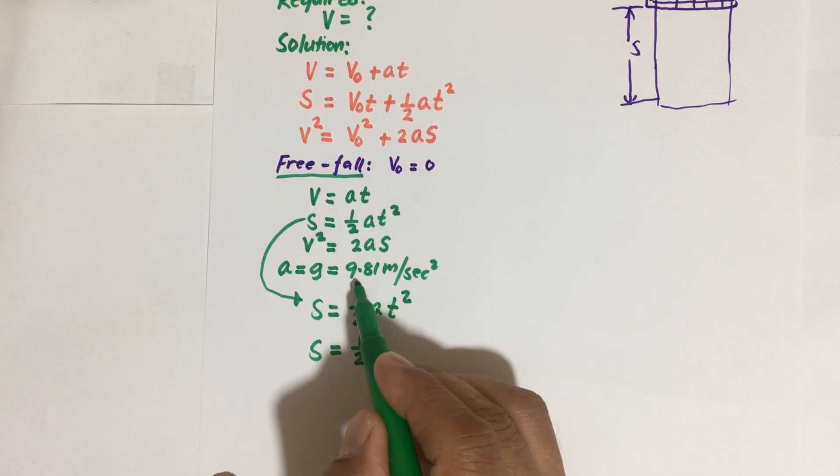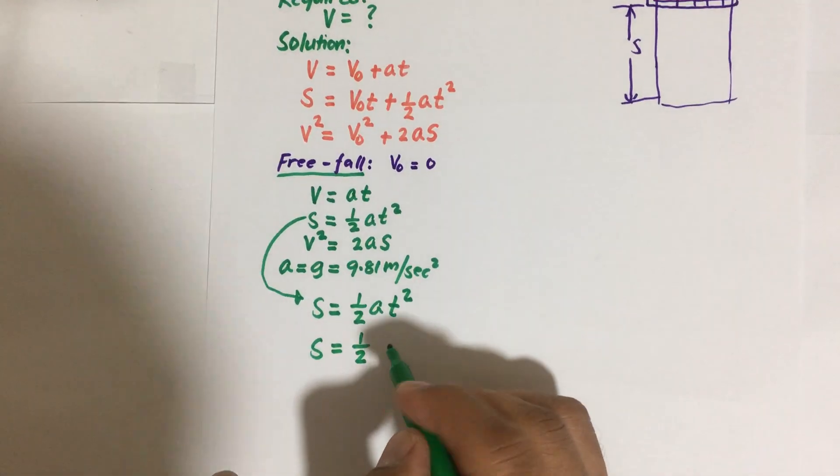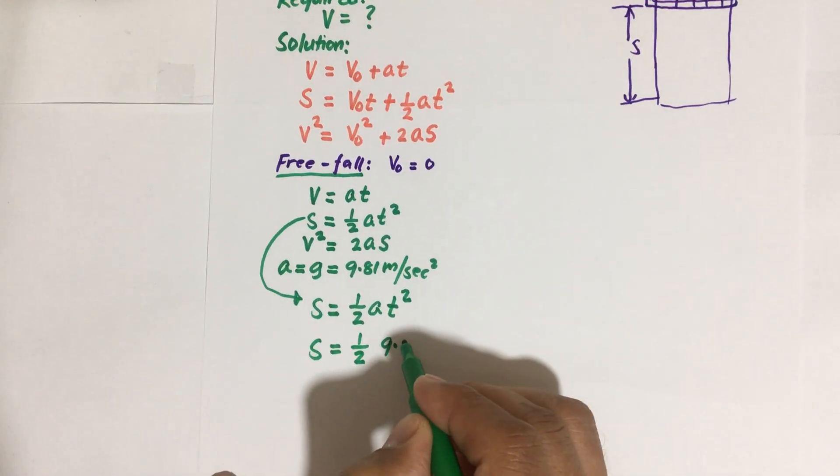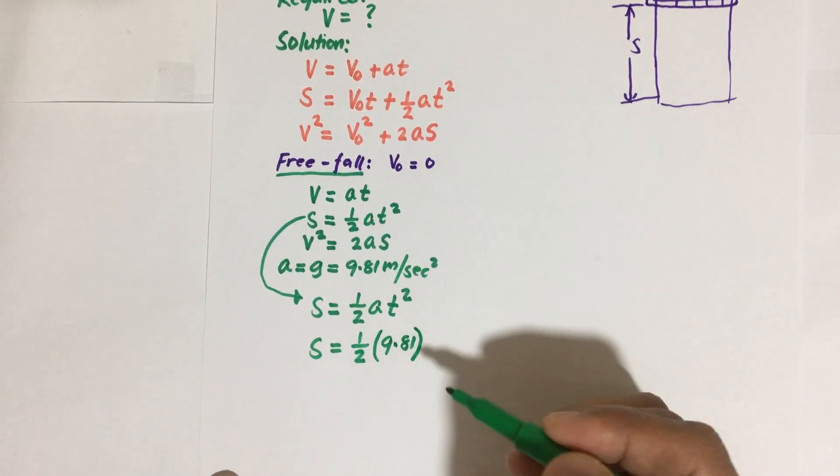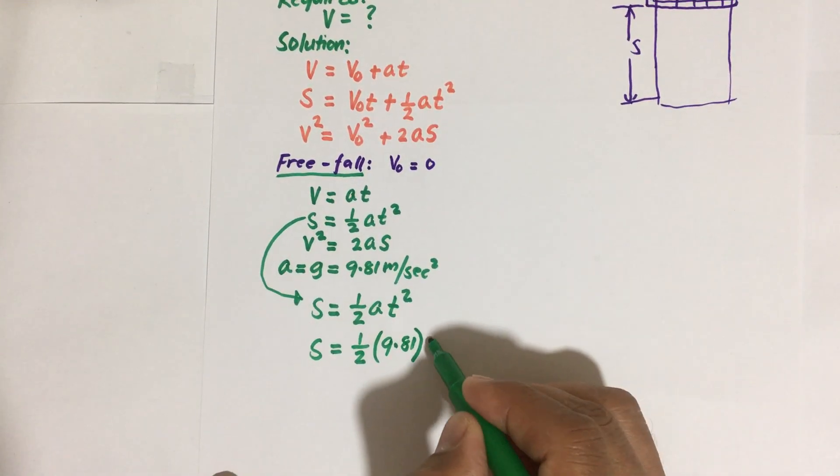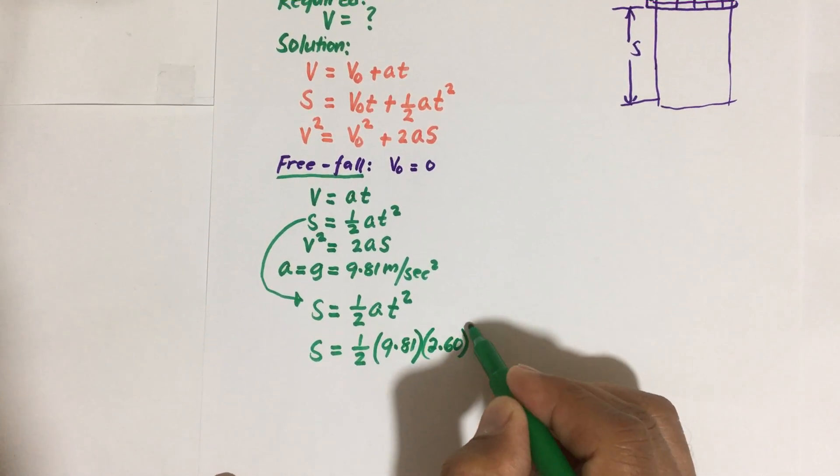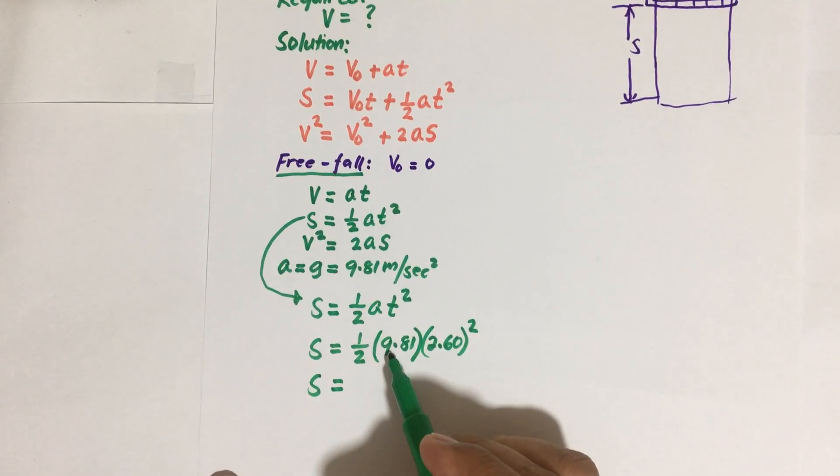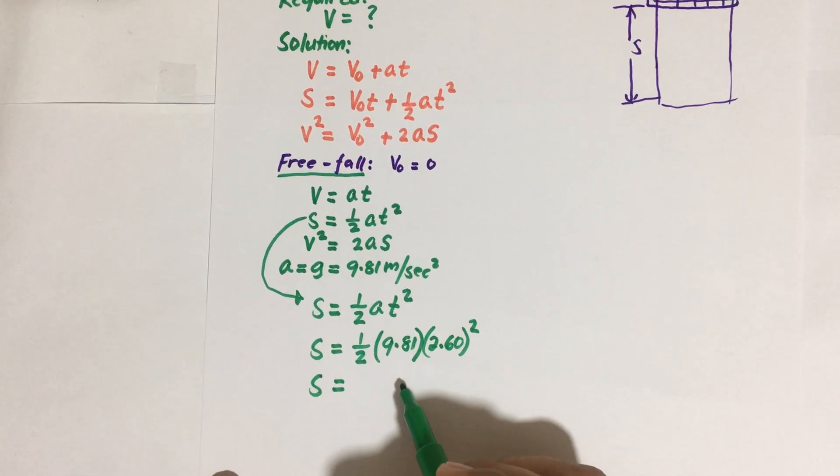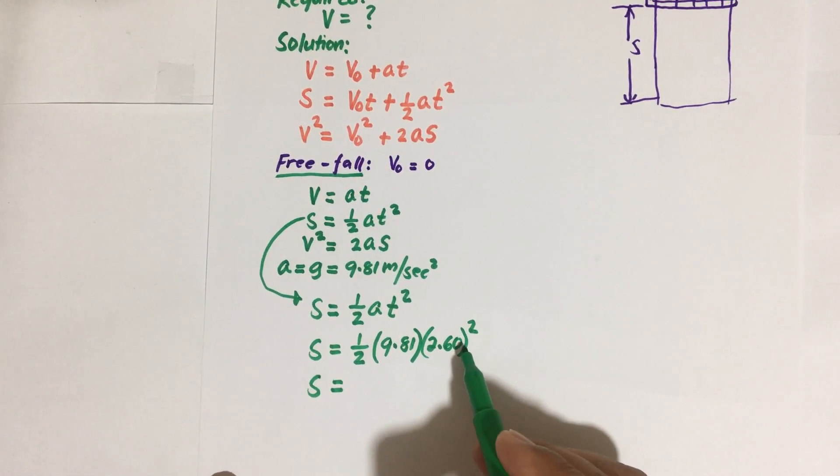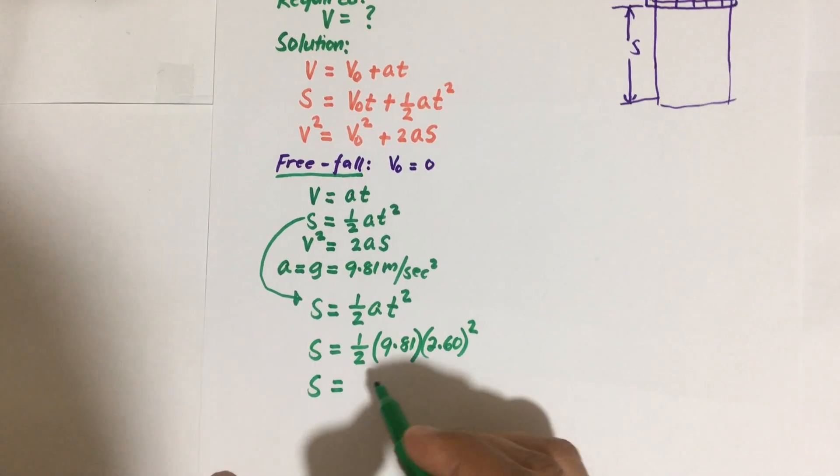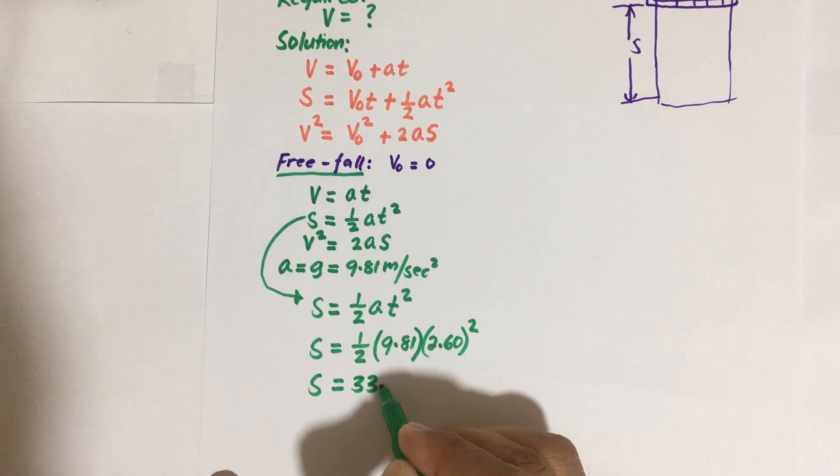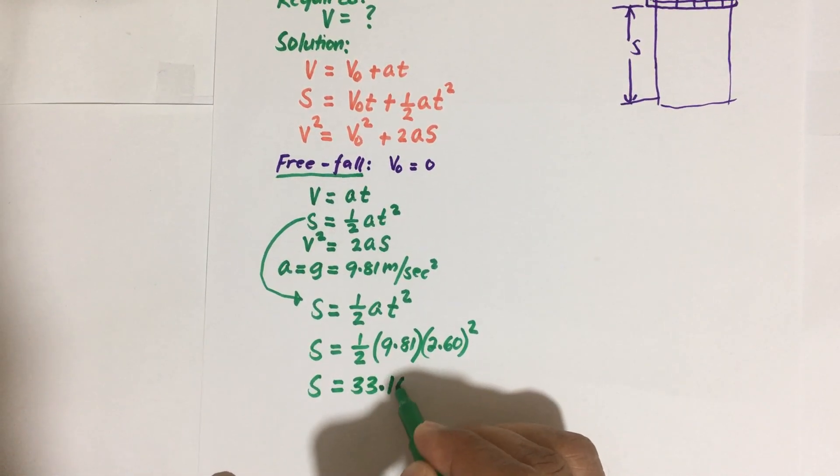So S is equal to one half. Our acceleration is the gravitational acceleration, that is 9.81 meters per second squared. We'll just omit the unit at the moment and then multiply by the time, which is 2.60, and you square this one. So the unit of the acceleration is 9.81 meters per second squared, then you have the time here in terms of seconds, then you square it. So we have seconds squared here as the unit, and then the denominator is also seconds squared, so seconds squared divided by seconds squared is equal to one. What is left is the meter. So therefore S is equal to, using your calculator, this will give us 33.16 meters. All right, so this is our answer.